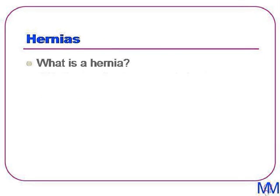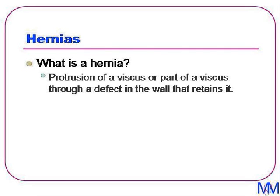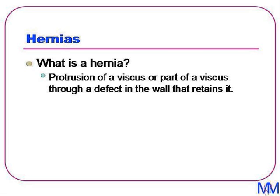So what is a hernia? This is important to be able to rattle off in a viva scenario. It is the protrusion of a viscus or part of a viscus through a defect in the wall that retains it.